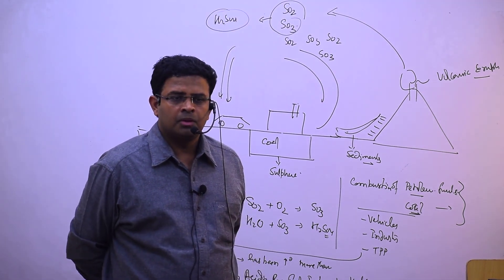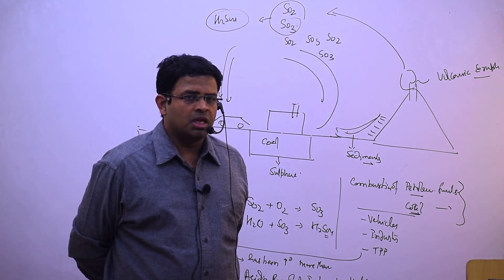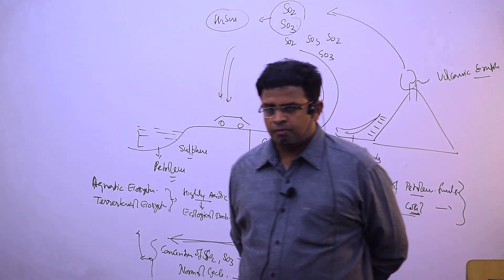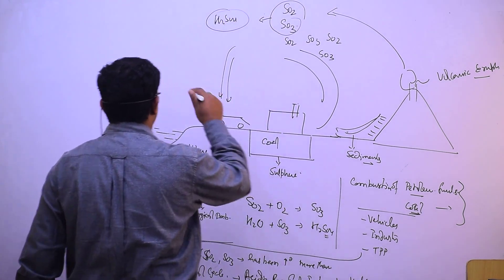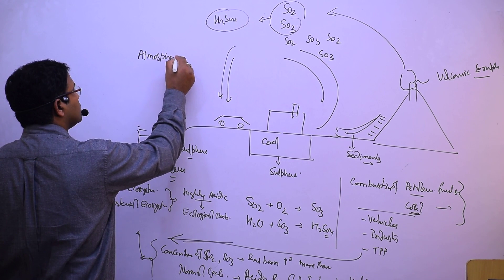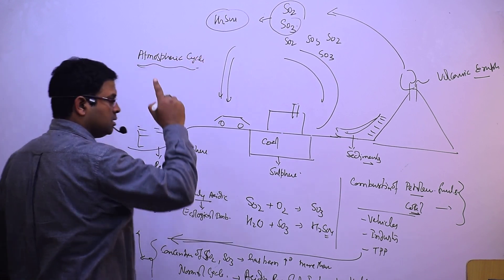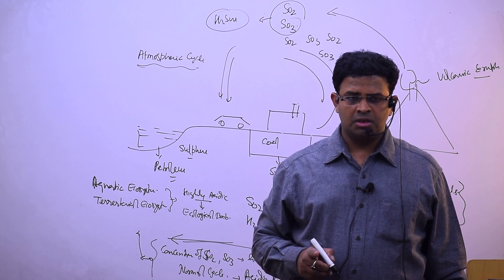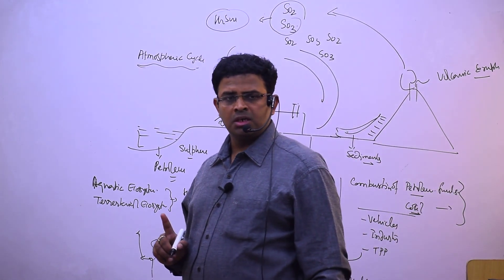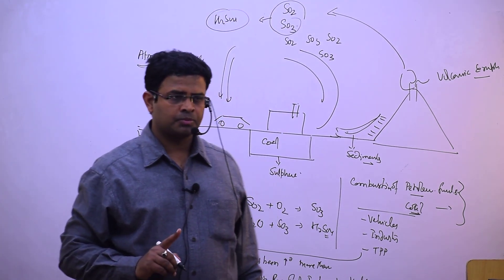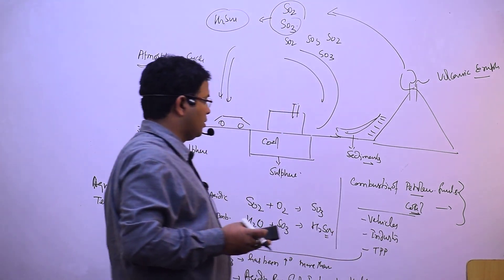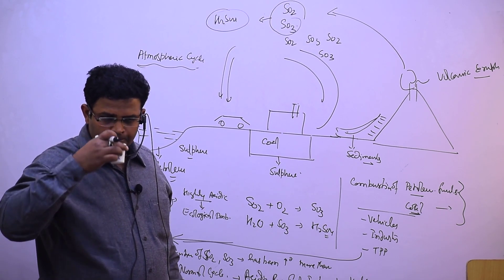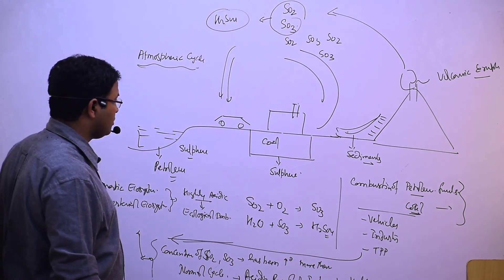So which cycles have we seen? Nitrogen, carbon, phosphorus, and sulfur cycle. Carbon cycle and nitrogen cycle are atmospheric cycles. Phosphorus cycle is only a terrestrial cycle.